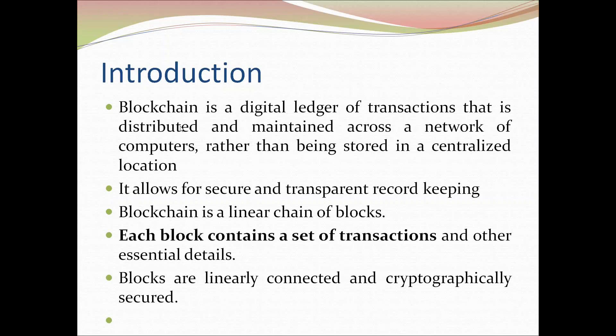Another property associated with the block is that once information is stored in a particular block, the information hash is computed on that block, and this hash cannot be changed. To maintain the integrity of the information in a particular block, this hash plays an important role. All the blocks are linearly connected and cryptographically secured, meaning whatever information is in a particular block is in encrypted form. Without permission and without decrypting that information, we won't be able to access it. That is how security is provided to the information in a particular blockchain.